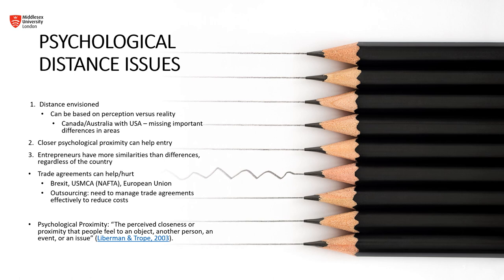The third component is that entrepreneurs have more similarities than differences regardless of the country. The act of taking on risk, starting a business, looking at marketplace opportunities, risks, challenges, adaptability, and coping — entrepreneurs, regardless of the culture or country they come from, are very similar.